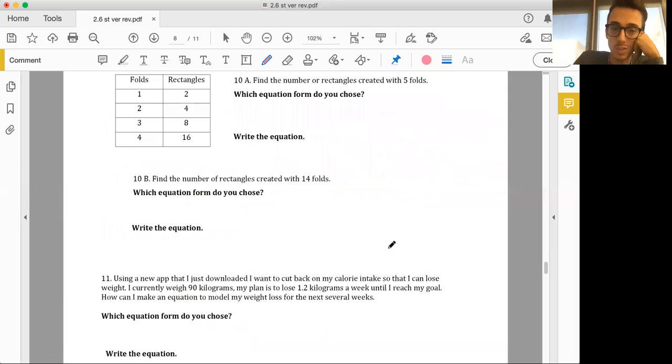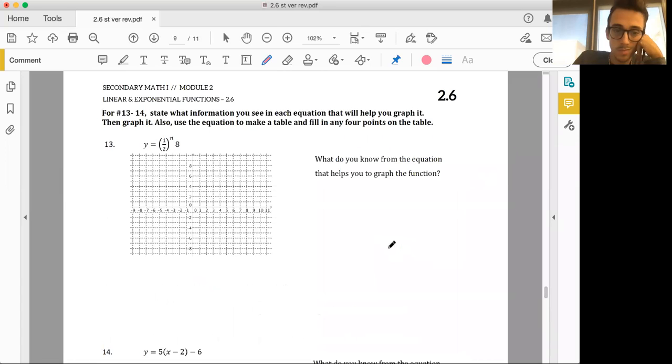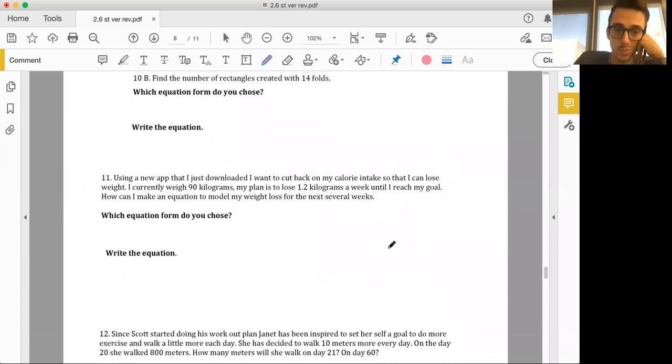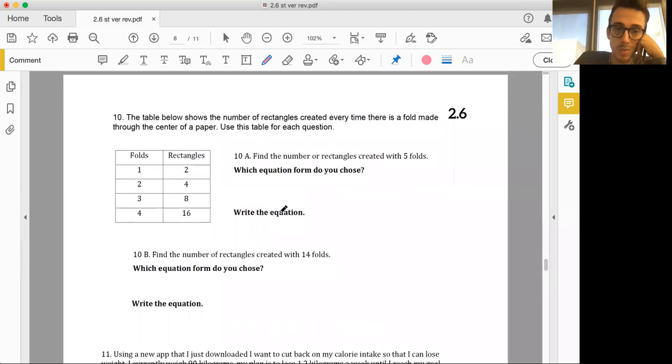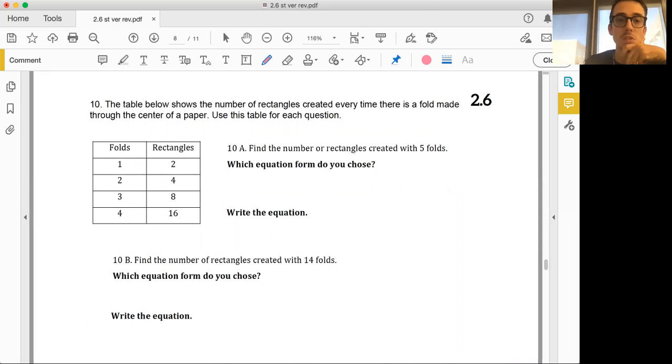Let's see if we can get one that's exponential. Let's see. Okay, so let's see this table. Table shows the number of rectangles created every time there's a fold made through the center of the paper. Use this table for each question. So I know that it's jumping from 2 to 4, which is normally adding 2, but then it jumps 4 to 8. So I know that this is definitely exponential, but why? Why do you think this is exponential?